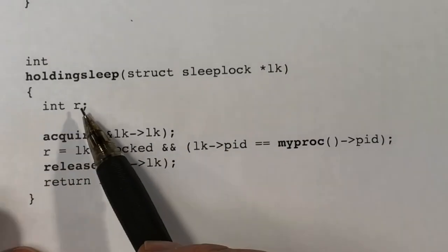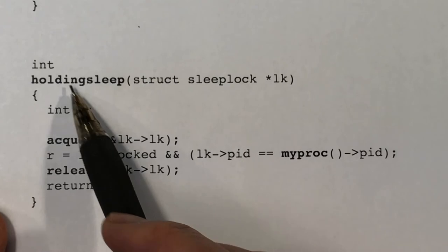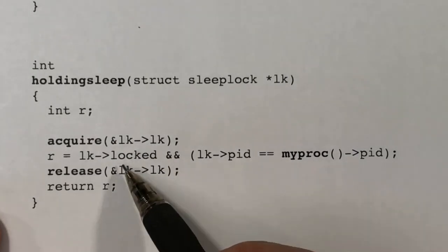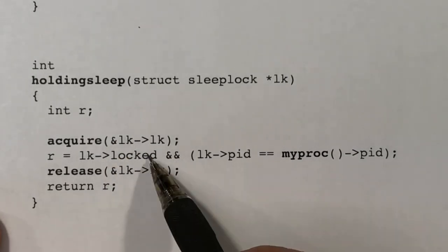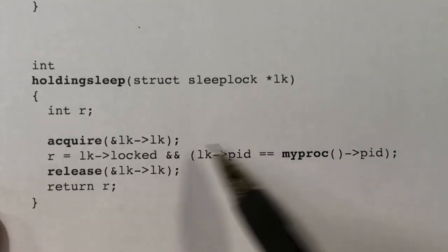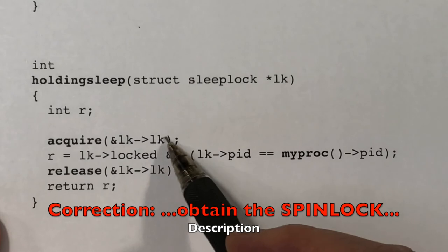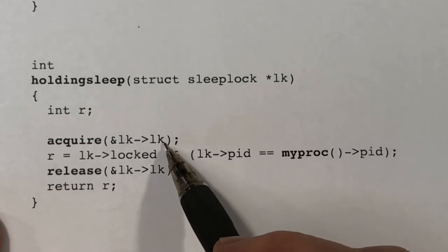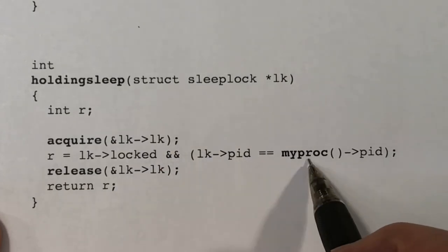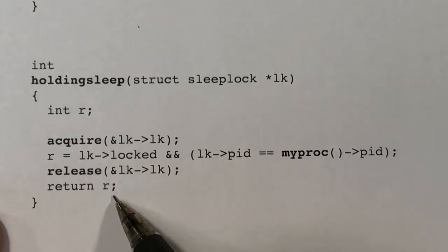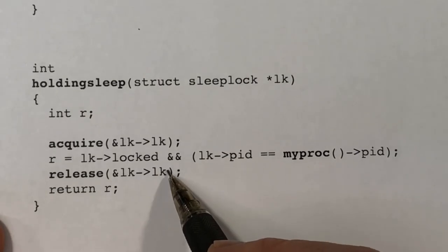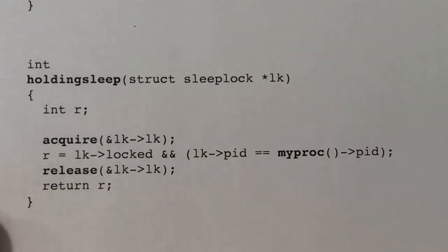Finally, we have the holding_sleep function, which is used for debugging. It returns a boolean, and if it ever returns false when the lock should be held, we call panic. It looks at the locked field and the pid field, but before doing so it must obtain the lk spin lock. It checks these fields, returns true if the lock is held by the current process, and then releases the spin lock before returning. That's it for sleep locks — see you in the next video.